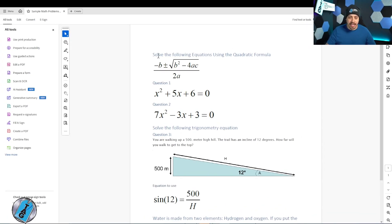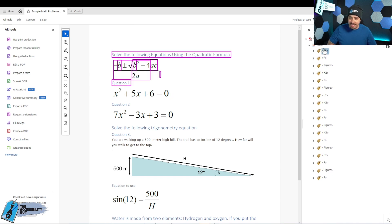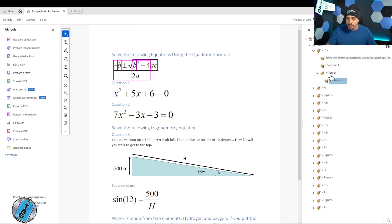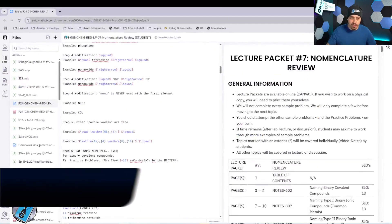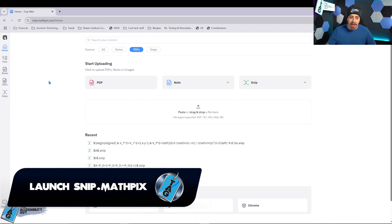All right, first things first, we have a sample document here that has some math in it, and we have like a varying degree of accuracy, but right now the figure tags are coming through pretty terribly. And we're going to launch my favorite editor right now, and that is snip.mathpix.